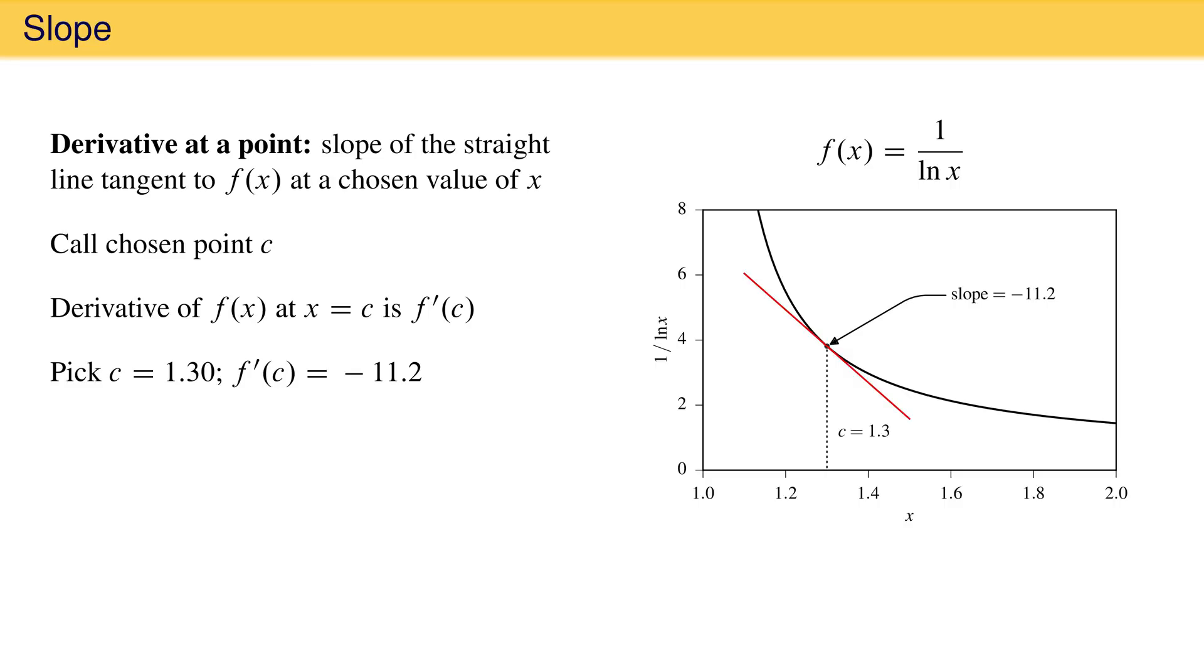We can do this again for the point c equals 1.35. The line tangent to the function at this point has a slope of negative 8.2, which means that the derivative of 1 over natural log of x at x equal 1.35 is negative 8.2. This can be repeated for any point on the curve in the plotted interval.